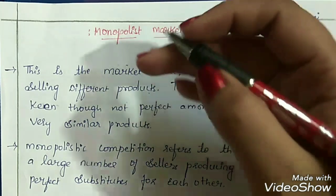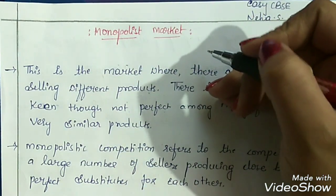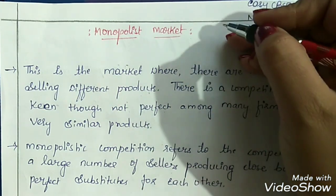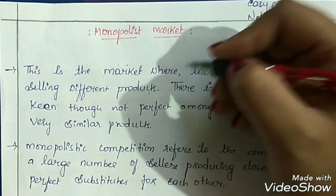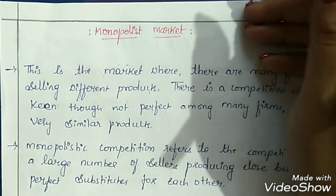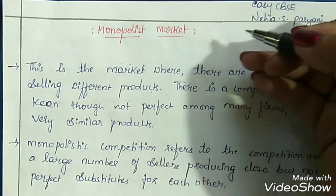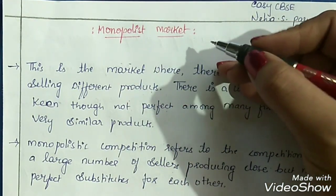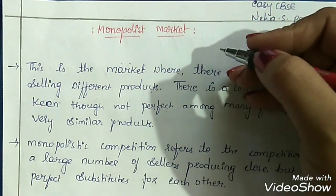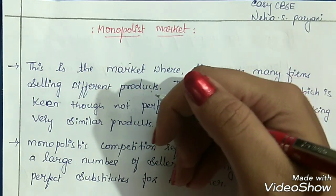Monopolistic market is a form of imperfect competition market. So till now we have discussed perfect competition, features of perfect competition market, price determination in perfect competition, and profit maximization in perfect competition. Along with that, we have also discussed monopoly market, its features and profit maximization in monopoly form of market. If you want the link for the previous videos, you can get it in the description box below.